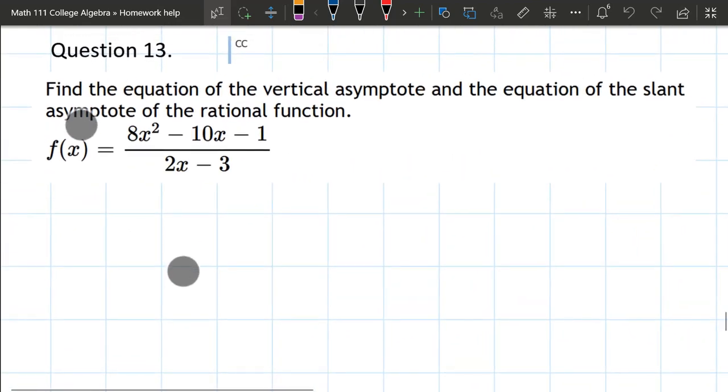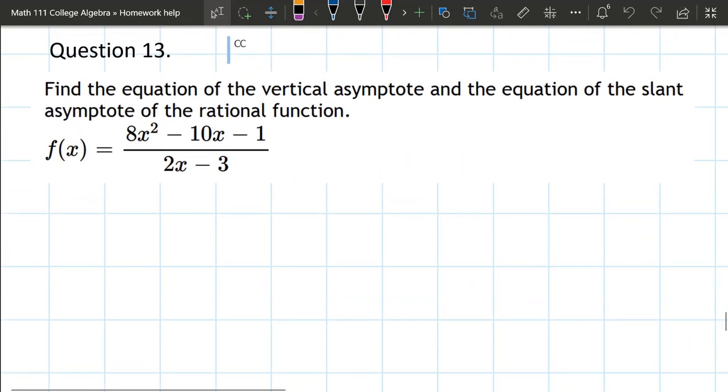So we have a question here about rational functions. We want to find out the vertical asymptote and the slant asymptote.